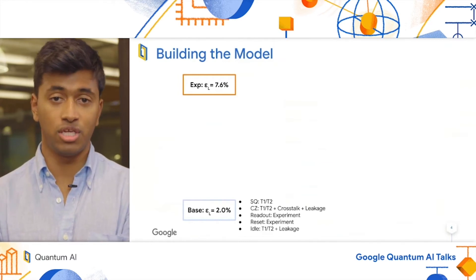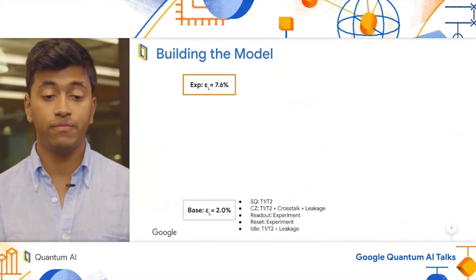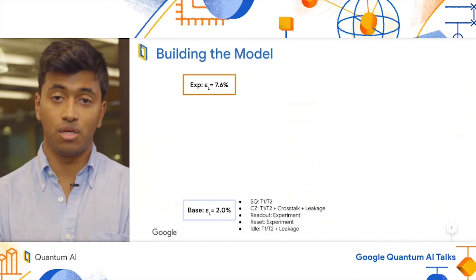and the idle error, which is the error of the data qubits idle while the measured qubits are read out and reset, is purely from T1, T2 and the leakage heating rate.